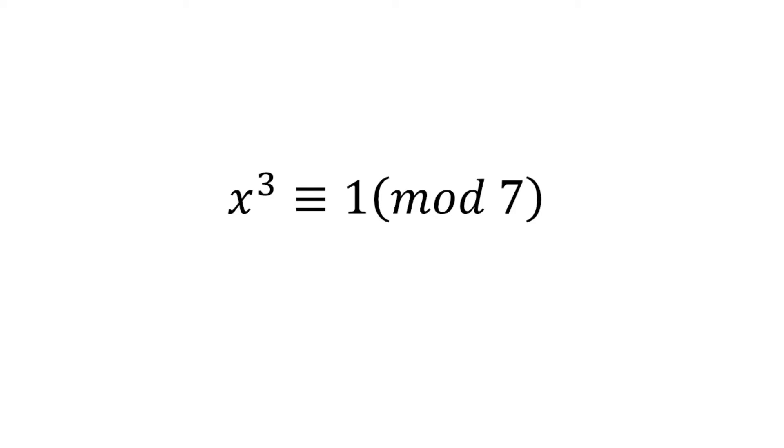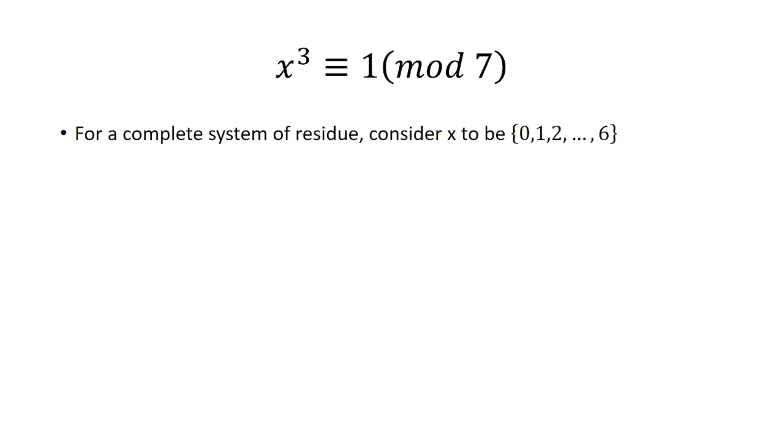Given x cubed is congruent to 1 mod 7, we want to find all possible values of x that satisfy this equality. For a complete system of residue, consider x to be between 0 and 6. So we're going to take each value and plug it into this equation.